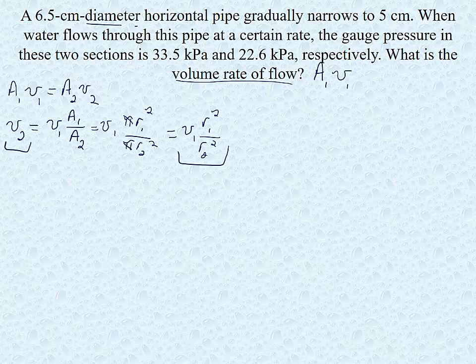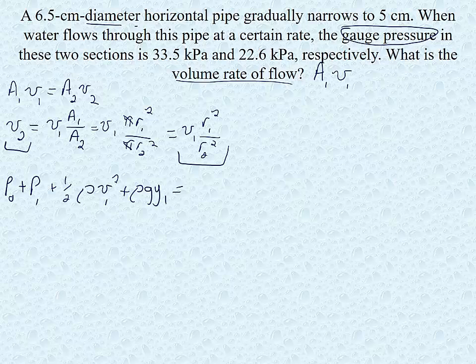Next, we need to use Bernoulli's equation to relate the pressure conditions at the two locations. It says a horizontal pipe so that means that they are at the same height. So remember Bernoulli's equation. And we are told that these are gauge pressures. So the gauge pressure means that we have to add in our atmospheric pressure as well. So we have Po plus P1 plus one half rho v1 squared plus rho gy1 equals Po plus P2 plus one half rho v2 squared plus rho gy2.